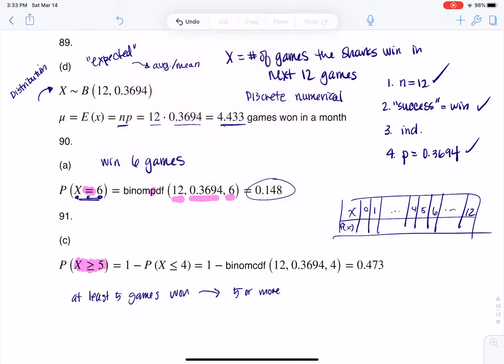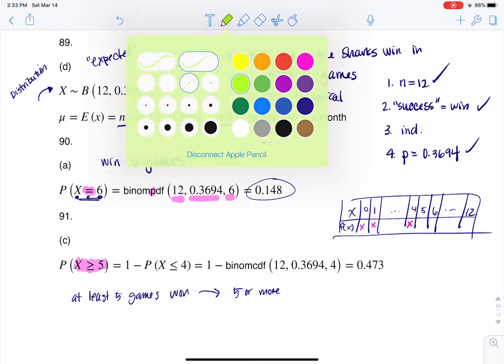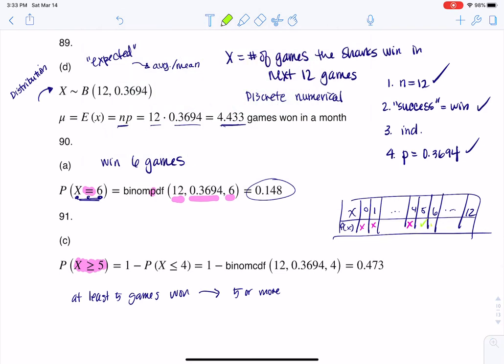So I do not want to include 0. I do not want to include 0. 0 is not greater than or equal to 5. 1 is not greater than or equal to 5. 4 is not greater than or equal to 5. But as you can start to see, 5 is greater than or equal to 5. 6 is greater than or equal to 5. All the way up to 12. So I want all of these numbers.